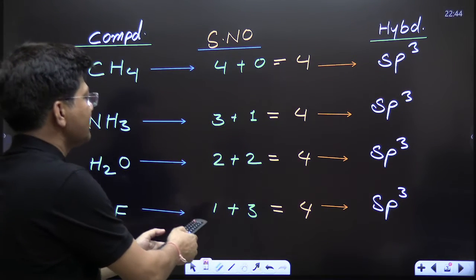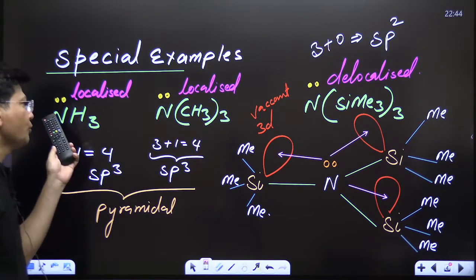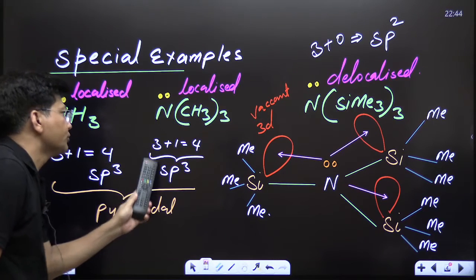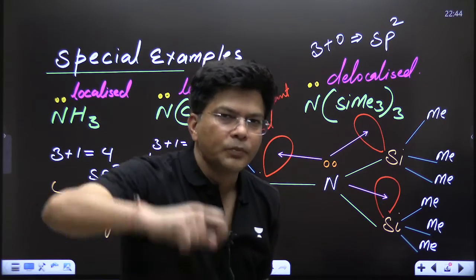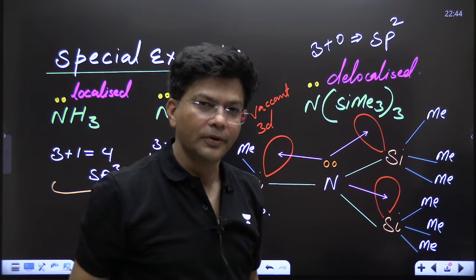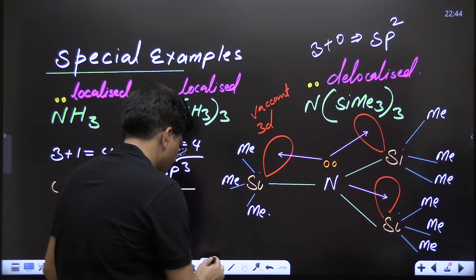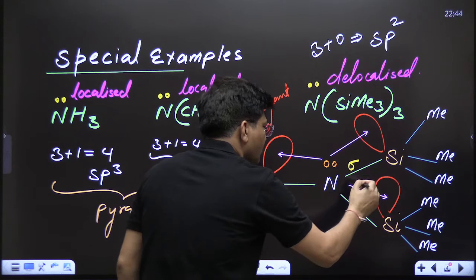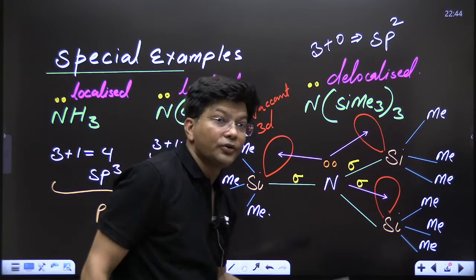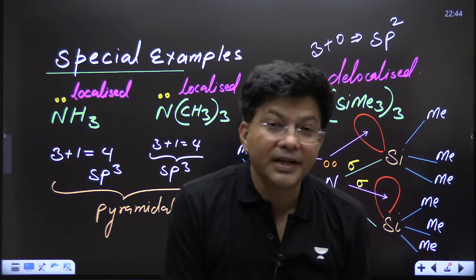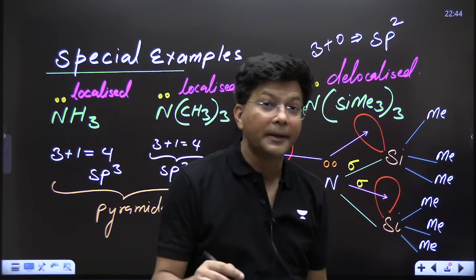Now a special example: N(SiH₃)₃. NH₃ and CH₃ we have done — they are simple. But this example is really the most dangerous. Nitrogen has one lone pair and three sigma bonds — one, two, three sigma bonds. Most students would think the steric number should come out to 3+1=4 and write sp³. This is a mistake that 99% of students make.